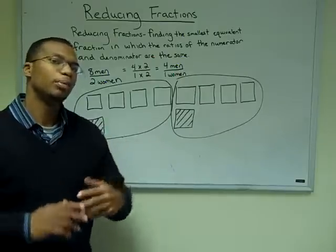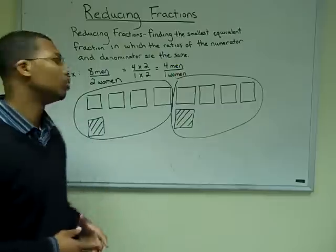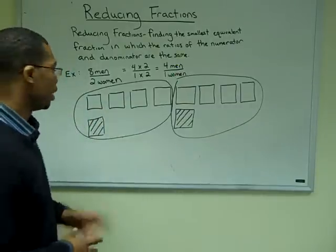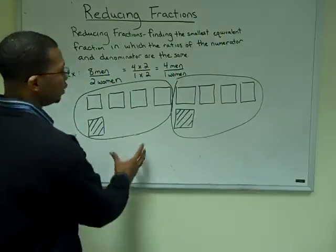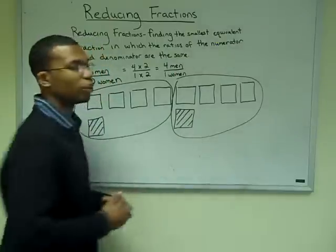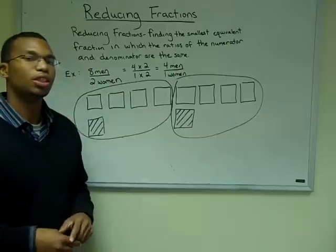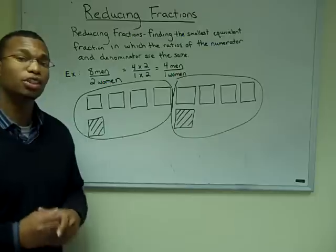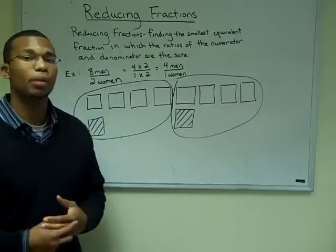Let's look at our last example with eight men to two women. If I was to use the white boxes to represent the eight men and the striped boxes to represent two women, I see that I can make two groups of four to one out of the eight to two ratio. Therefore, I can simplify eight men to two women to saying it's the same as saying four men to one woman.